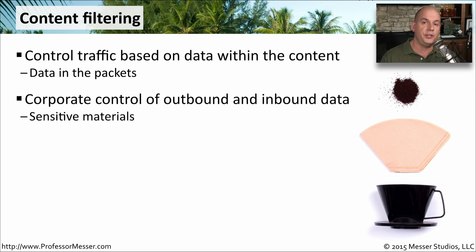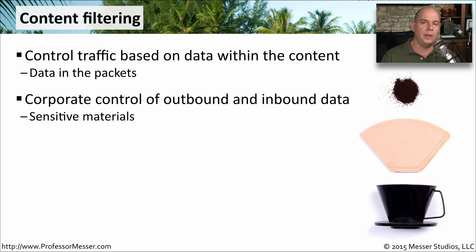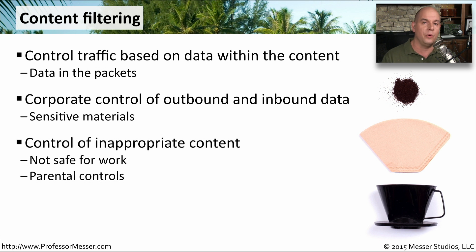For example, if you're an organization that has very sensitive data, you may want to allow or disallow access to certain websites. You may want to restrict people who have access to this sensitive data from accessing file sharing websites, to keep all of that data inside of your organization. Another way of implementing content filtering might be to allow or disallow access to certain types of content. Some organizations will not allow people to access certain types of websites based on the content contained on that website. This is very commonly done in the home for parental controls, to allow or disallow access for your children to visit certain websites.